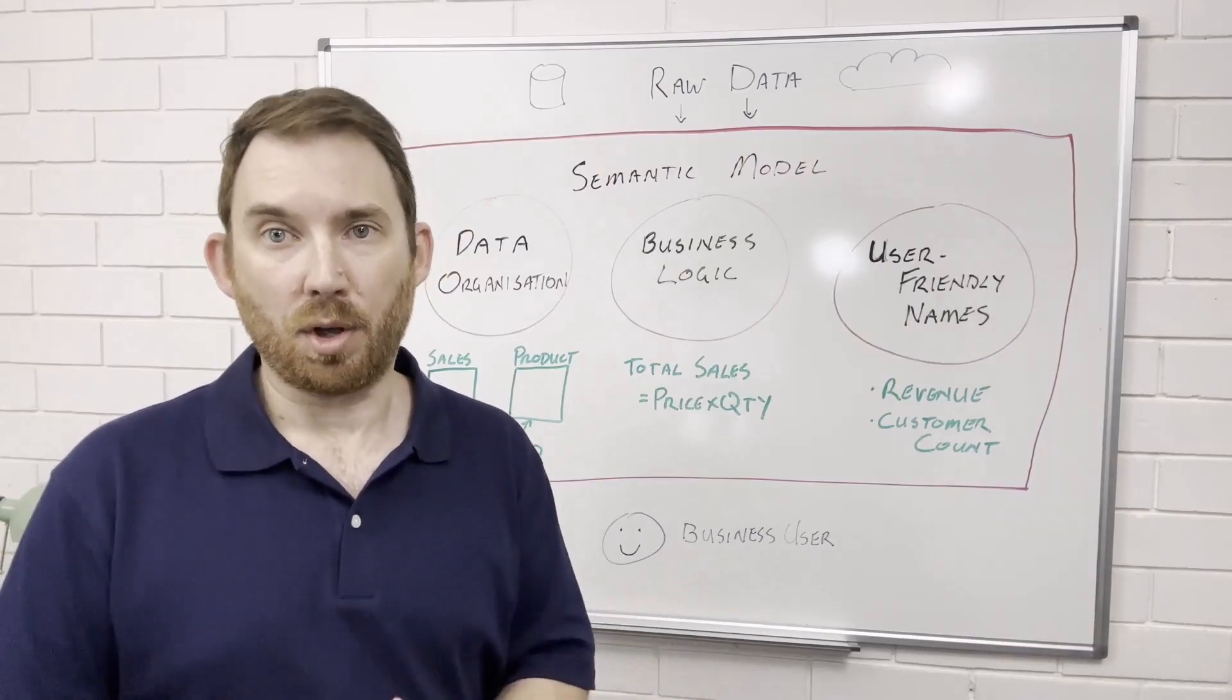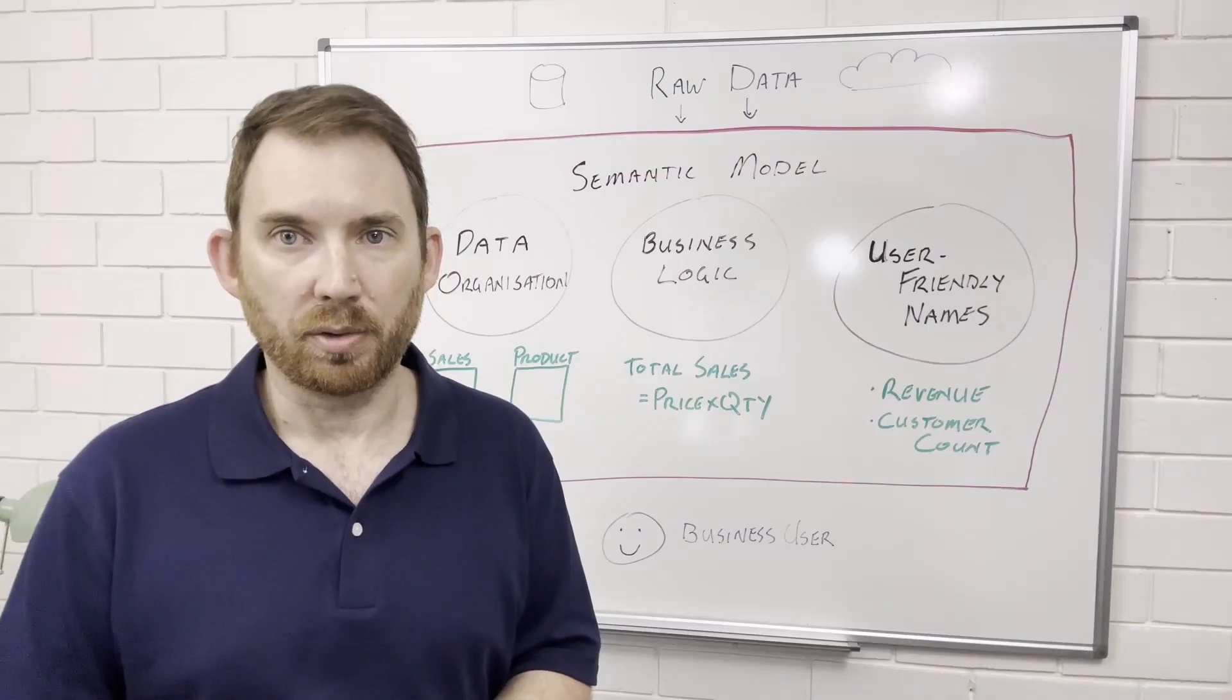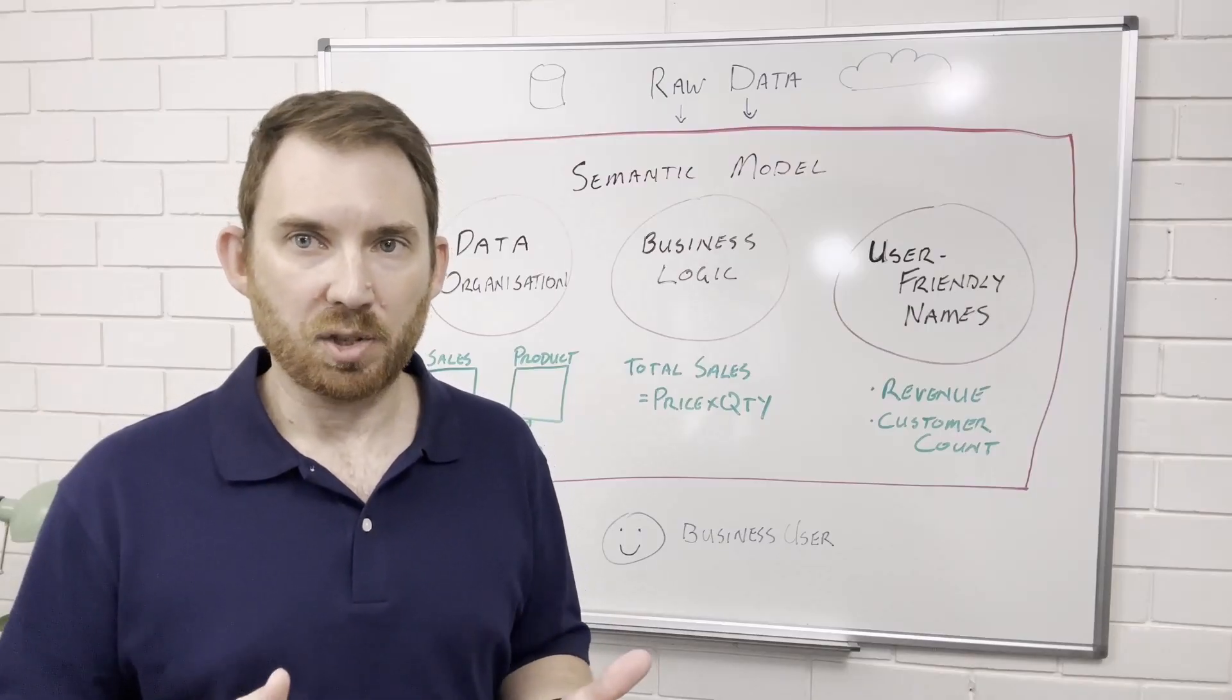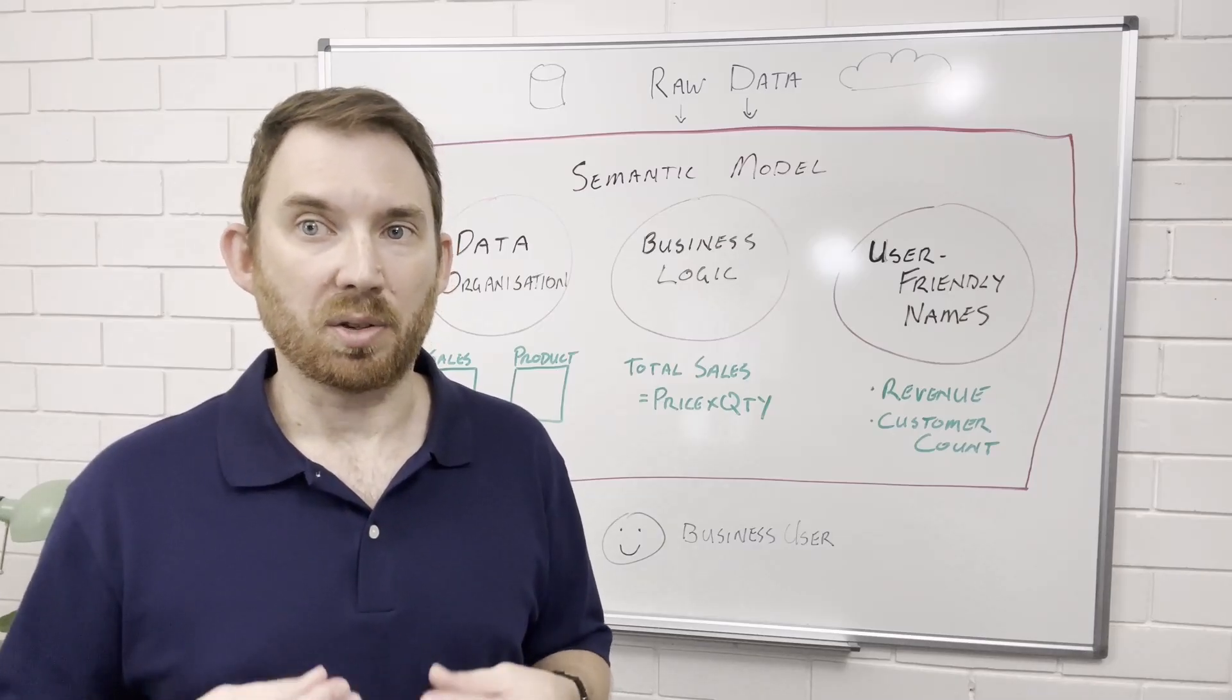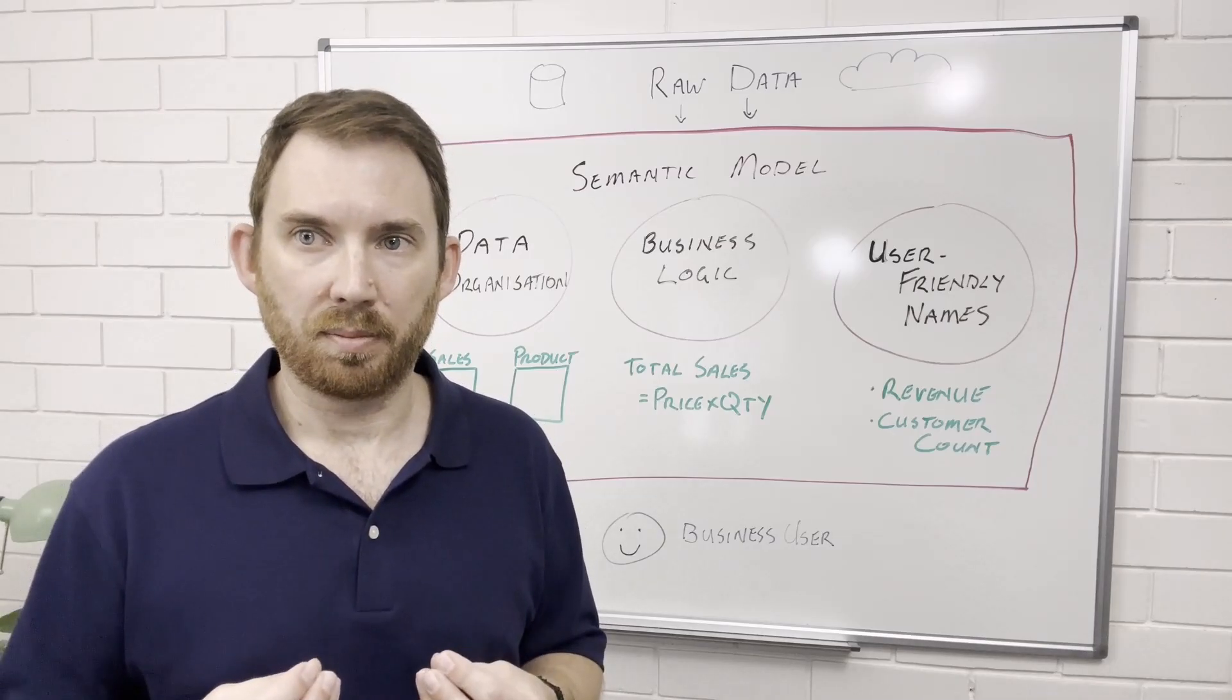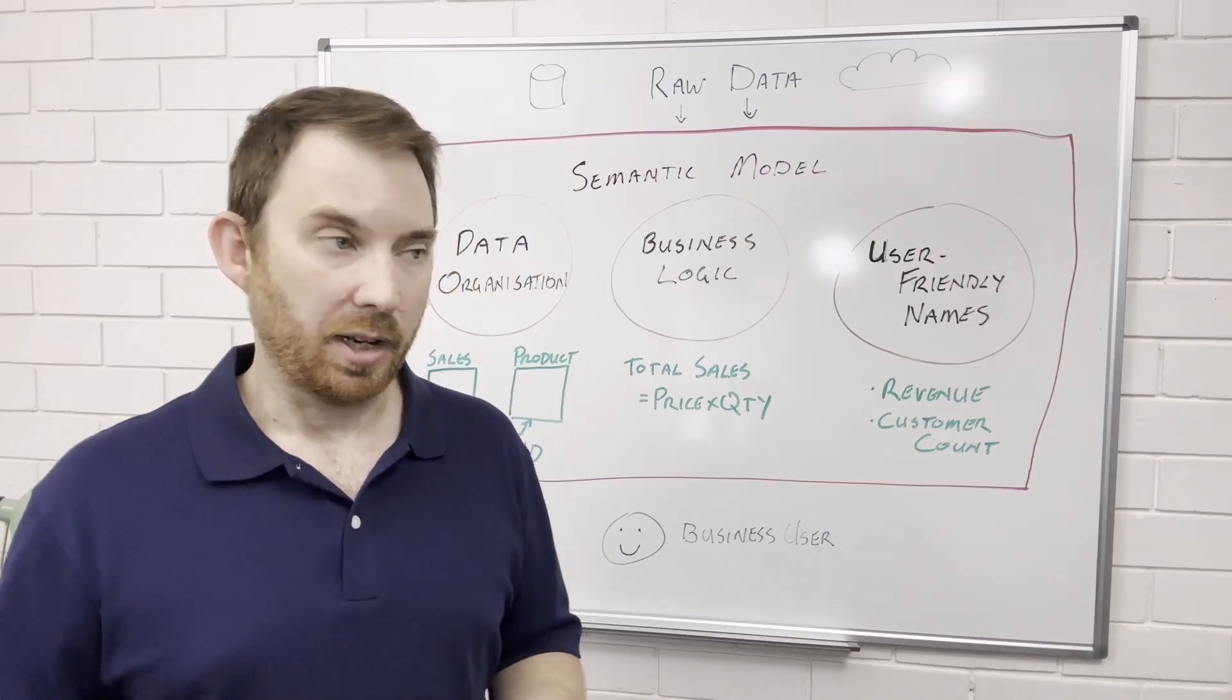So why does a semantic model matter? Well, a semantic model provides a single source of truth. It ensures everyone from analysts to executives see the same numbers, speak the same language, and make decisions based on consistent, reliable data. Plus it enforces security so users only see what they have access to.